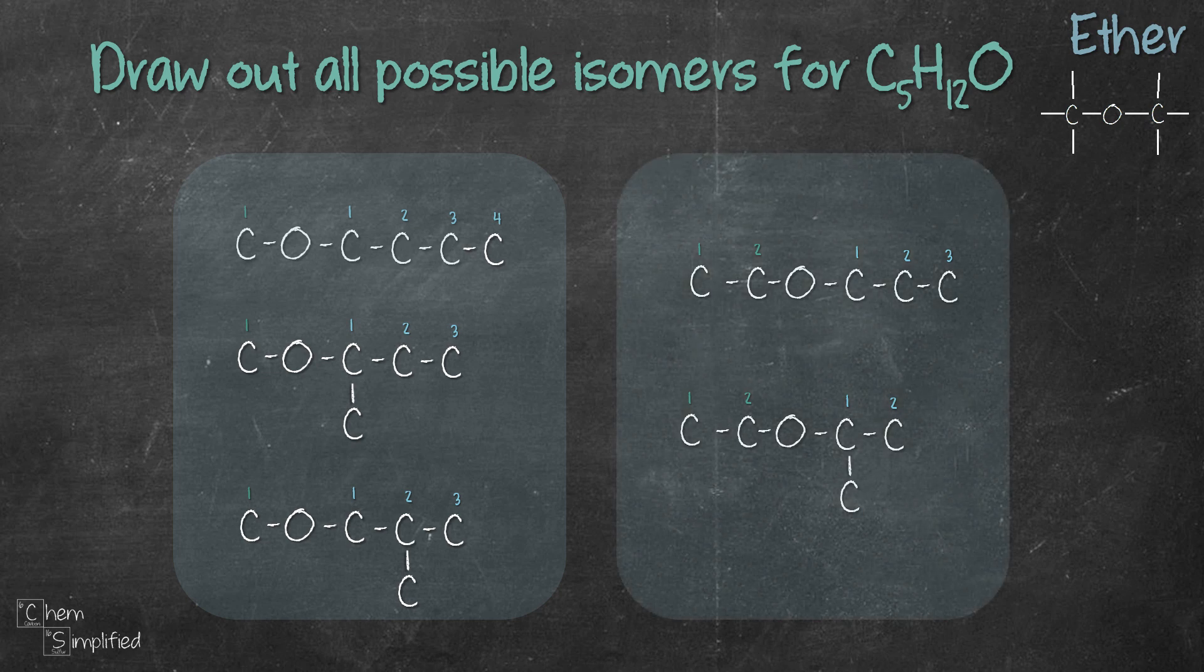Do we need to draw three carbons before oxygen followed by two carbons, like meaning CCCOCC? Nope, because that would give us the same structure that we have already drawn. So that's all the ethers we can draw for C5H12O.